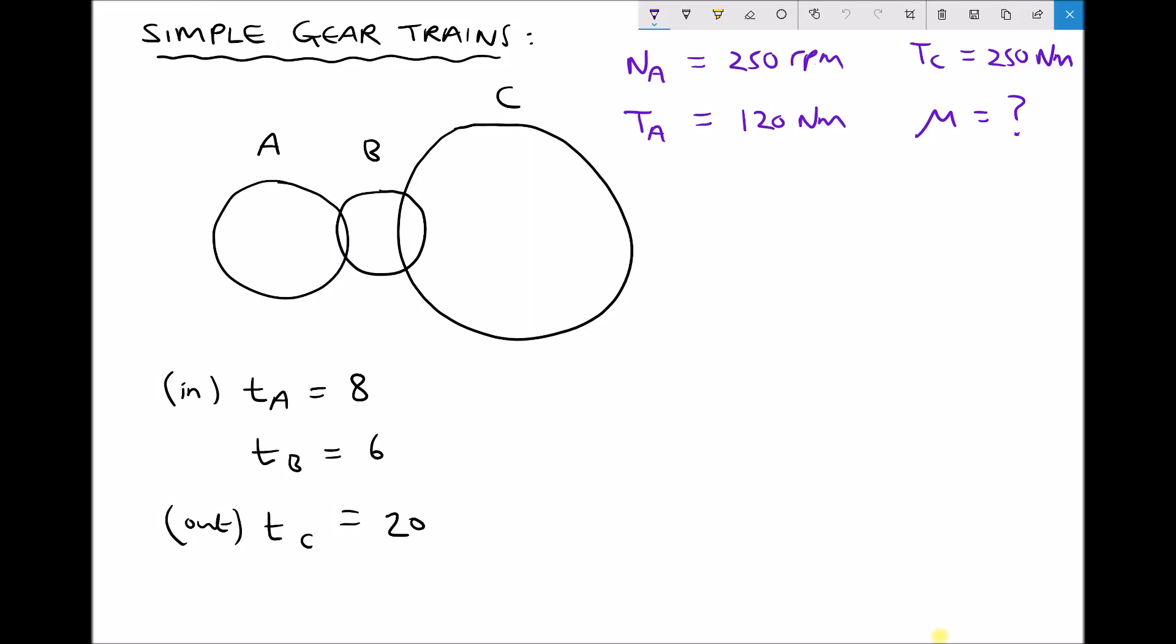In this gear train we have three gears. We have gear A which is our input, driving gear B, and then gear B driving gear C which is our output.